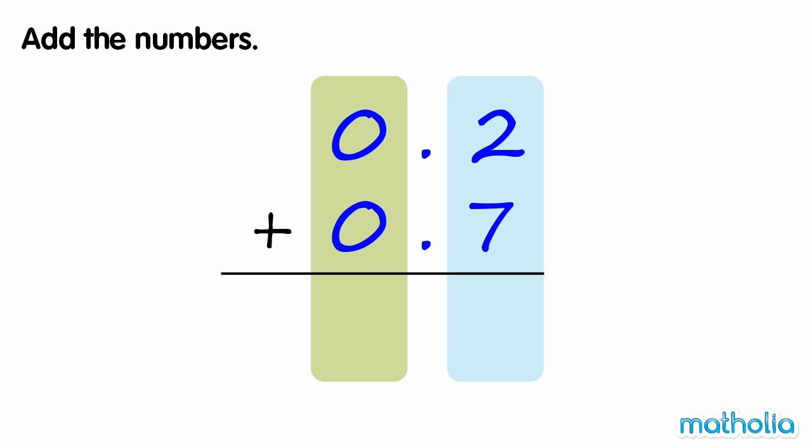Add the numbers. We need to find 0.2 plus 0.7. We start by adding the tenths. 2 tenths plus 7 tenths equals 9 tenths.